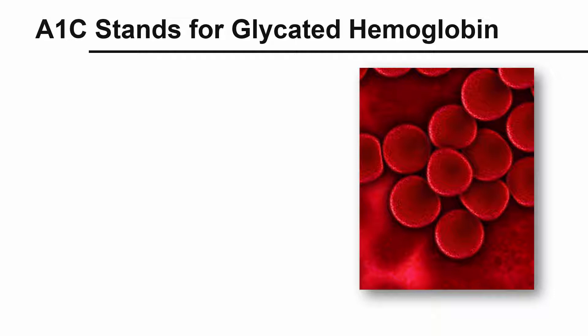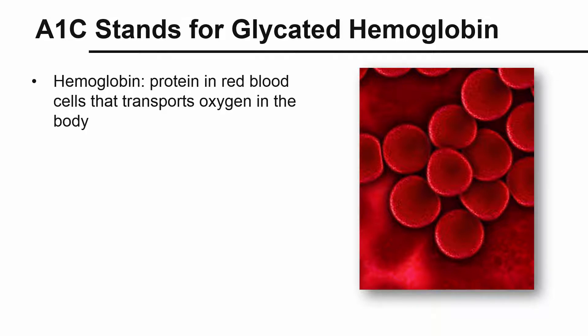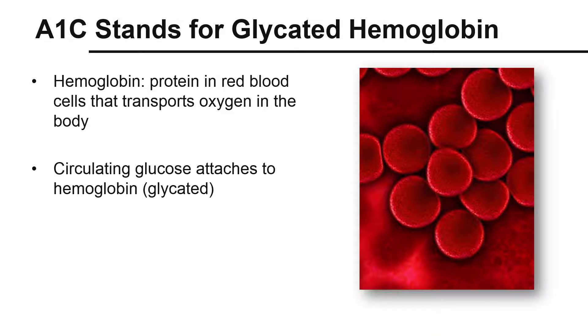A1c is not an acronym, but stands for glycated hemoglobin. Glycation is a technical way of saying how a sugar molecule binds to a protein. Hemoglobin is the protein in red blood cells that transports oxygen in the body. Some circulating glucose in the bloodstream attaches to the hemoglobin in red blood cells. When hemoglobin is bound to glucose, it's called hemoglobin A1c.